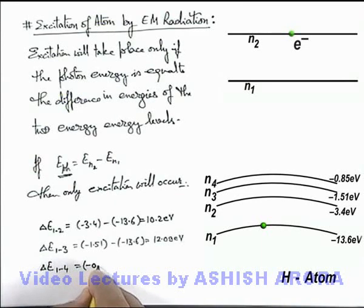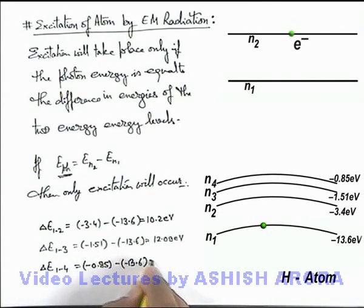And if delta E we calculate from 1 to 4, it is minus 0.85 minus minus 13.6. This is 12.75 electron volts.